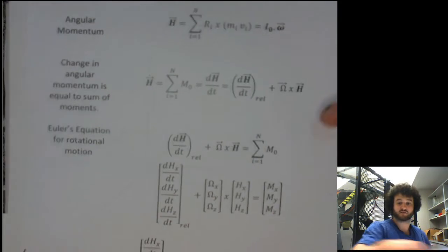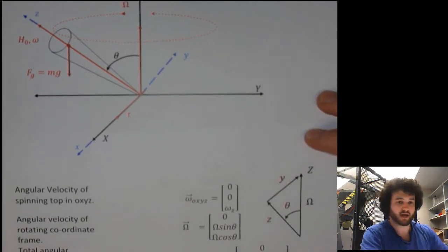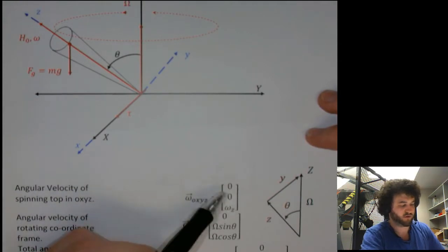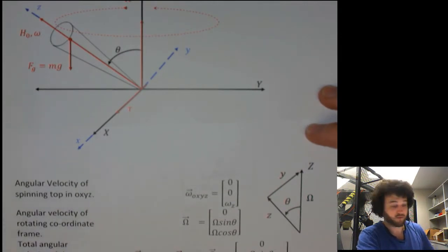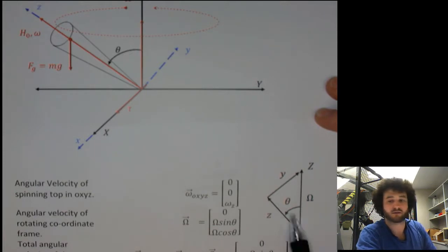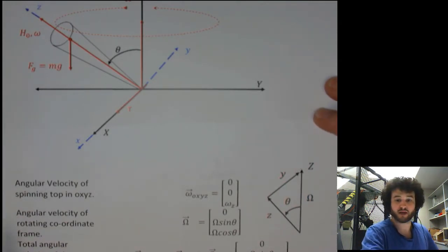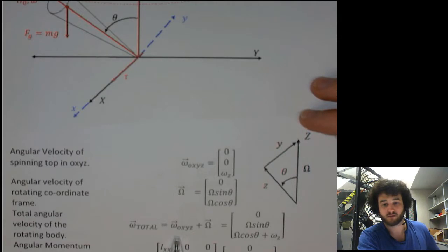The angular velocity of the spinning top in the rotating coordinate frame looks like this: because our lowercase z is always aligned with the spin axis, we have zero in x, zero in y, and omega_z in z. The angular velocity of the rotating coordinate frame is expressed consistently in lowercase unit vectors — capital Omega is defined along the capital Z-axis, so we decompose it into lowercase unit vectors using angle theta. The total angular velocity of the spinning top is then the angular velocity of the top inside the rotating frame plus the angular velocity of the rotating frame itself.